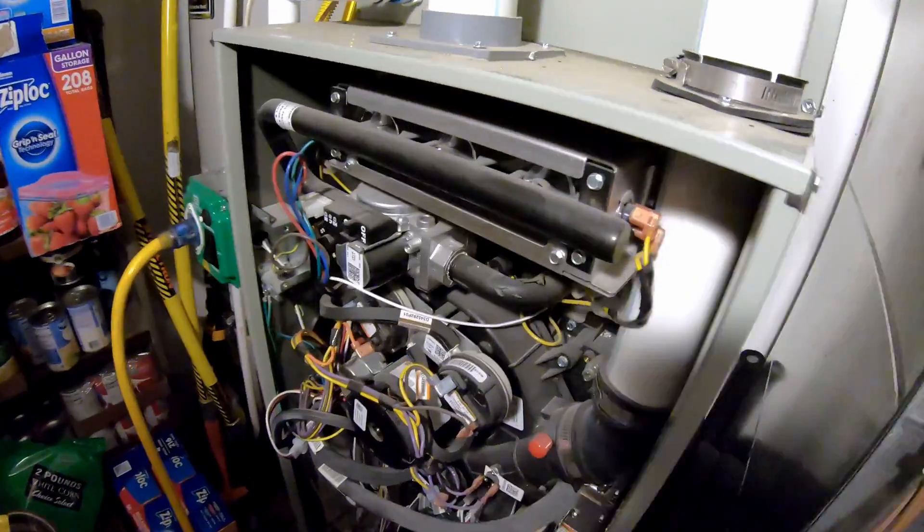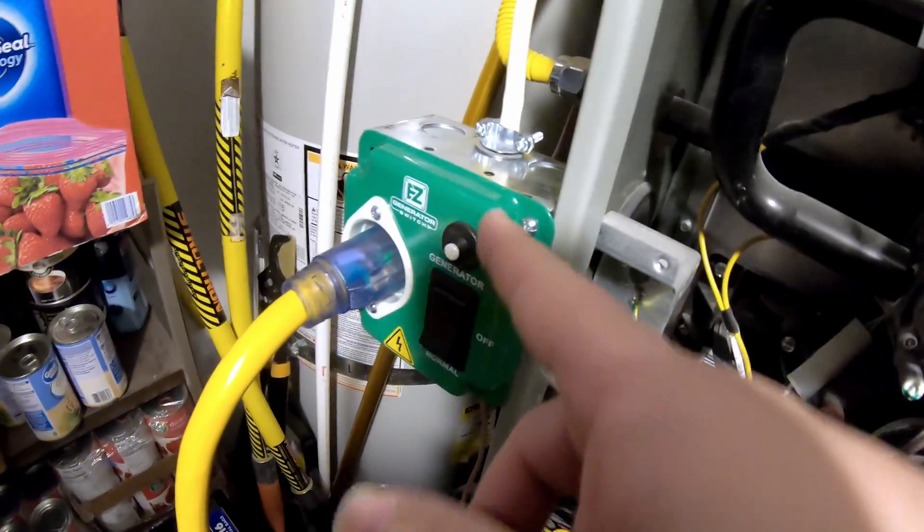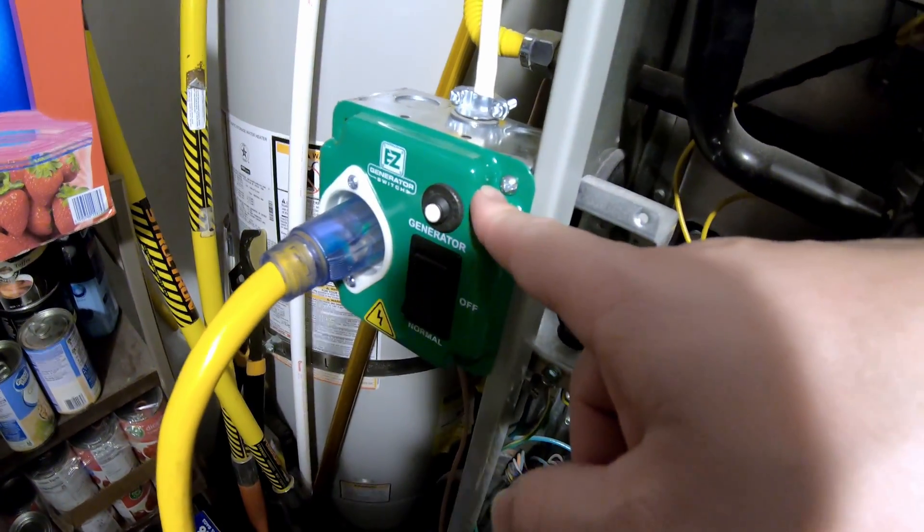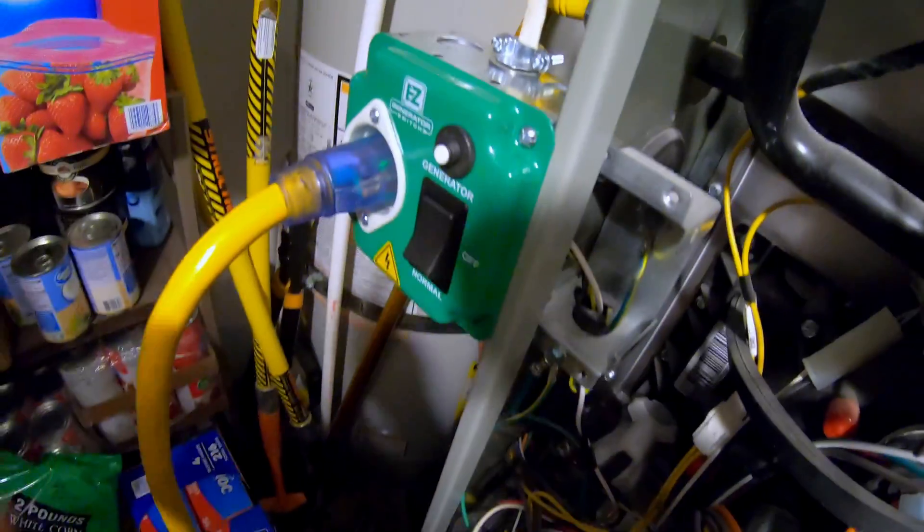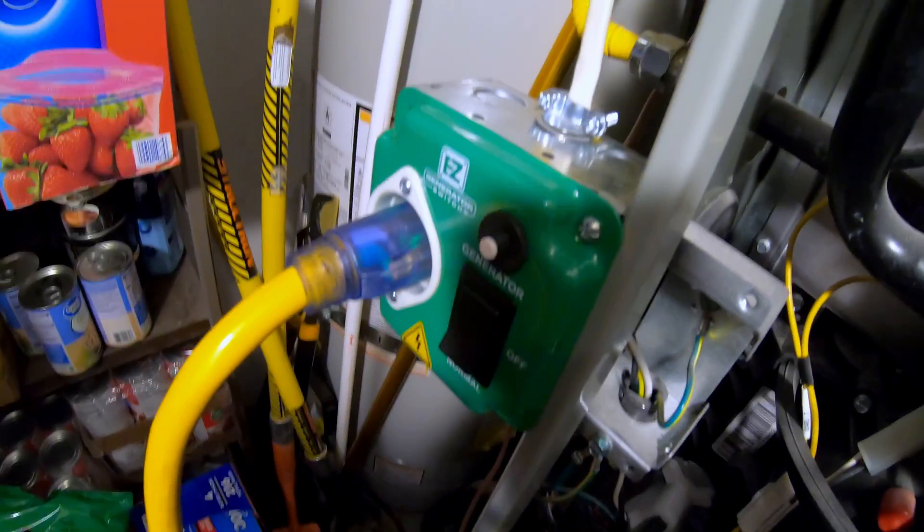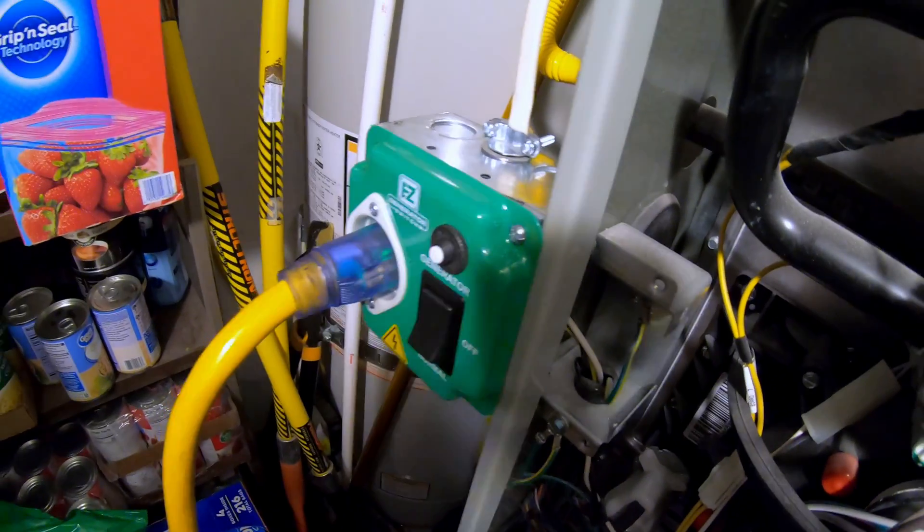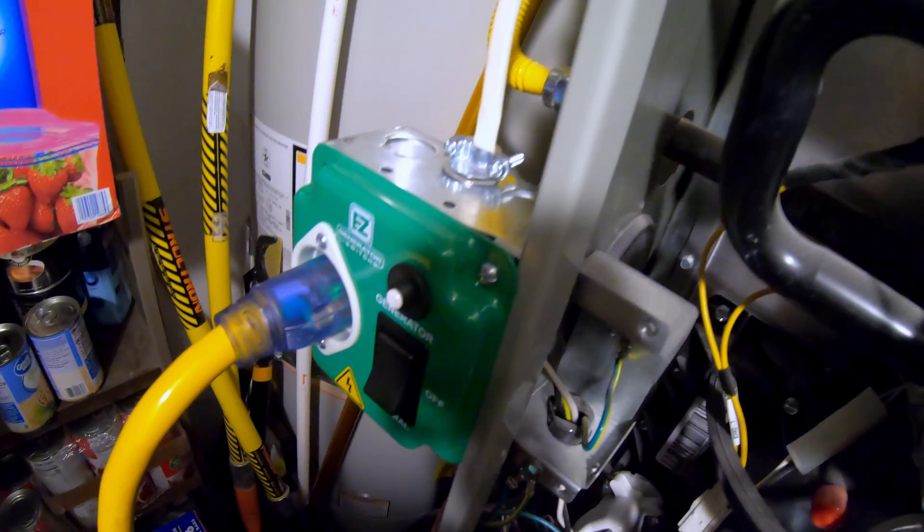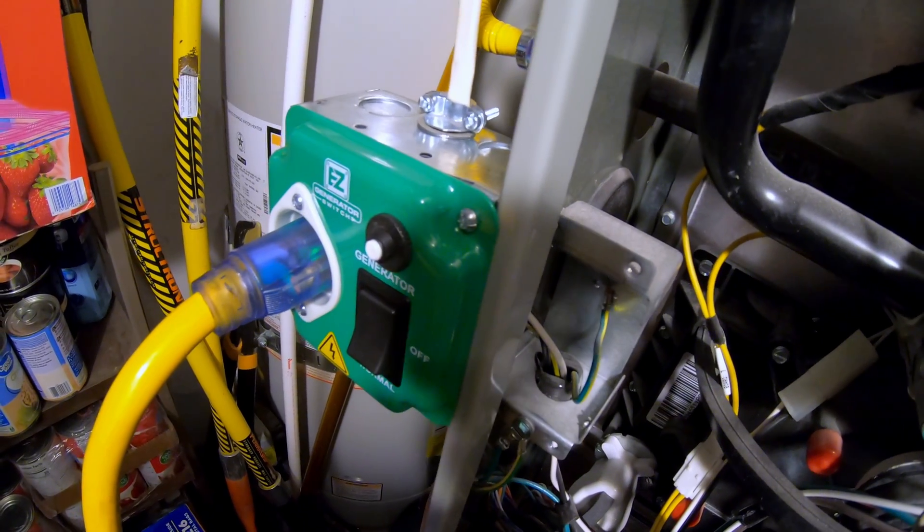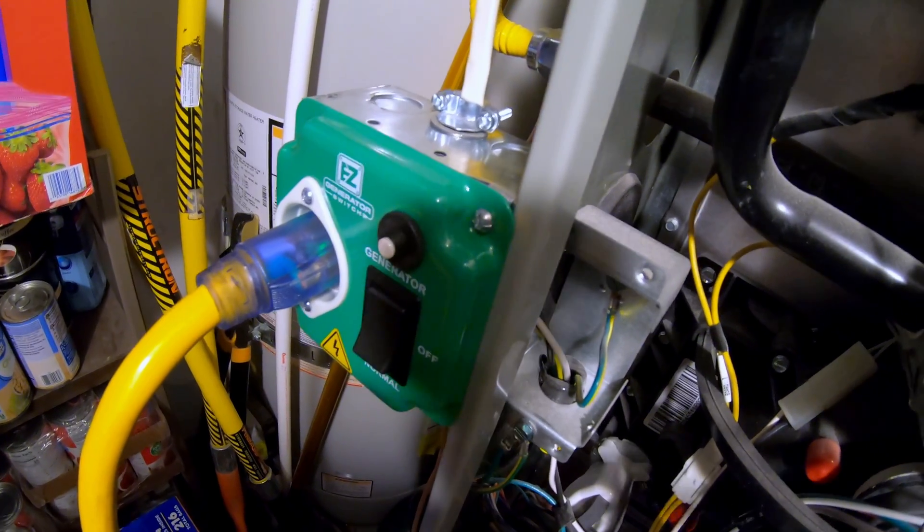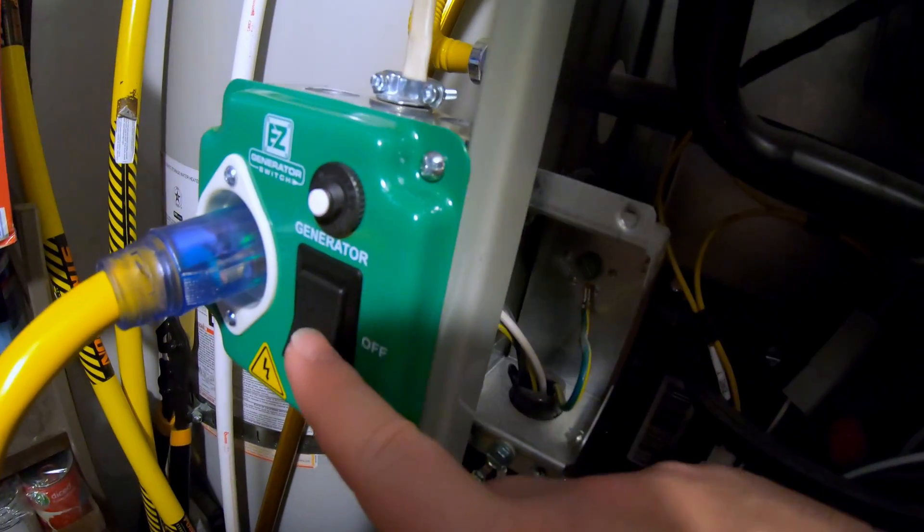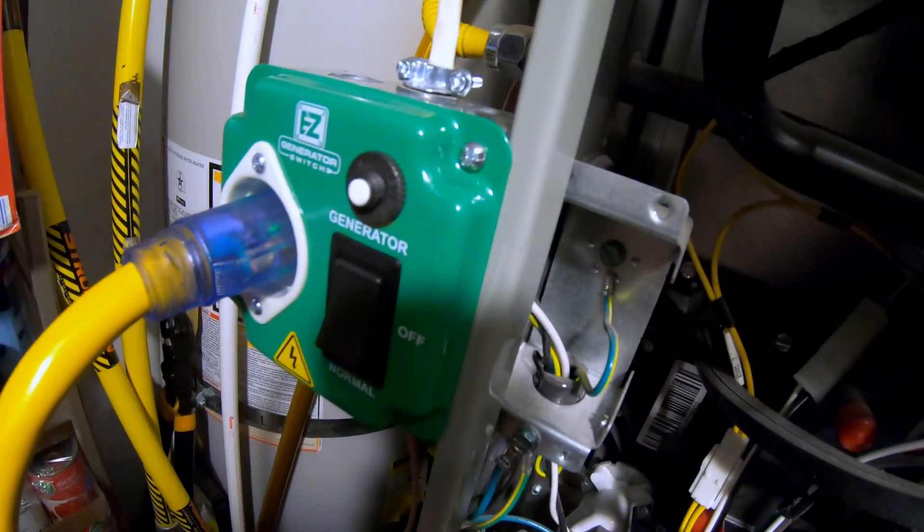Now the secret sauce to making this work is this magic little box right here. This box lets us plug directly in any kind of power source, whether it be a power station, battery power station like this, gas generator, whatever, and you're able to switch it over safely to generator mode there.